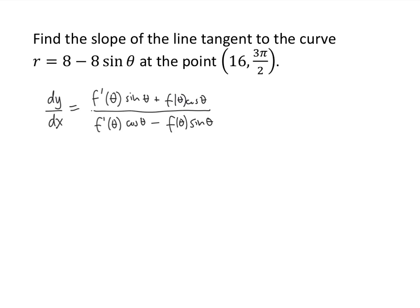What we need to remember is that the top of this fraction is simply the derivative with respect to theta of y, dy/dθ, which is the derivative of r sine theta — because y equals r sine theta in polar coordinates. Using the product rule we get f prime of theta (r prime) times sine theta plus f of theta (r) times cosine theta. Similarly, the bottom is just dx/dθ, the derivative with respect to theta of r cosine theta.